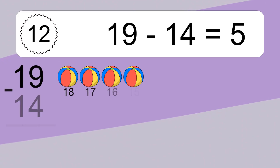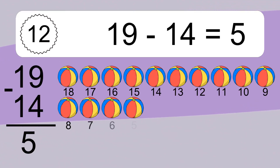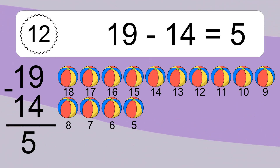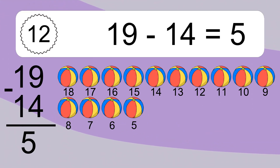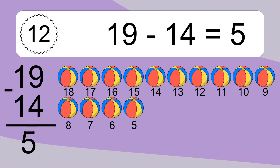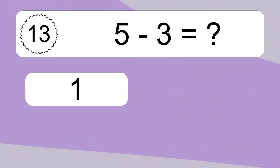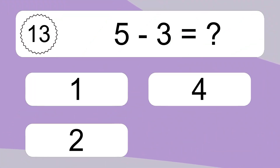19 minus 14 equals what? 19 minus 14 equals 5. Let's count it: 18, 17, 16, 15, 14, 13, 12, 11, 10, 9, 8, 7, 6, 5.